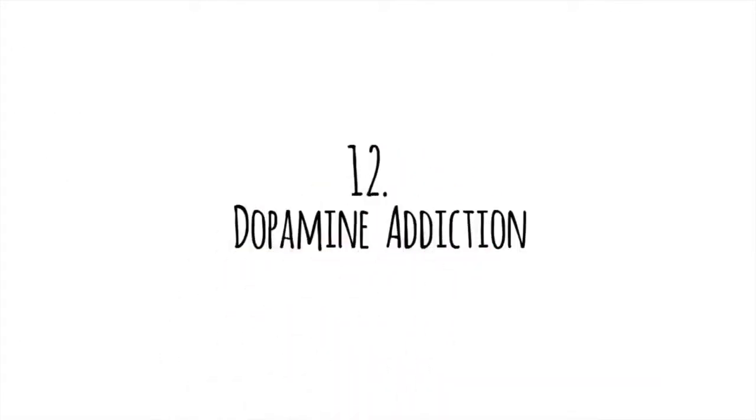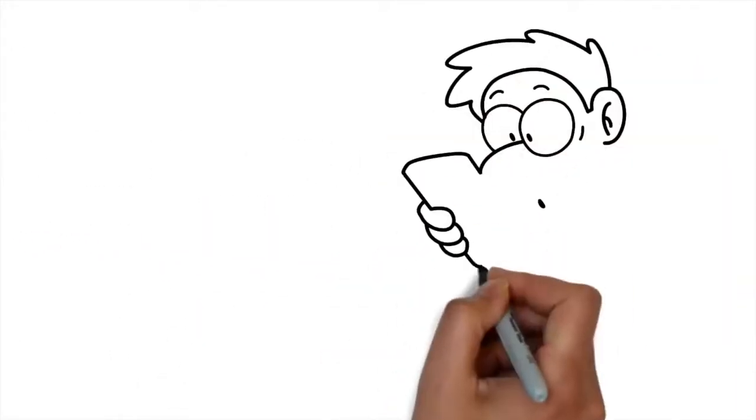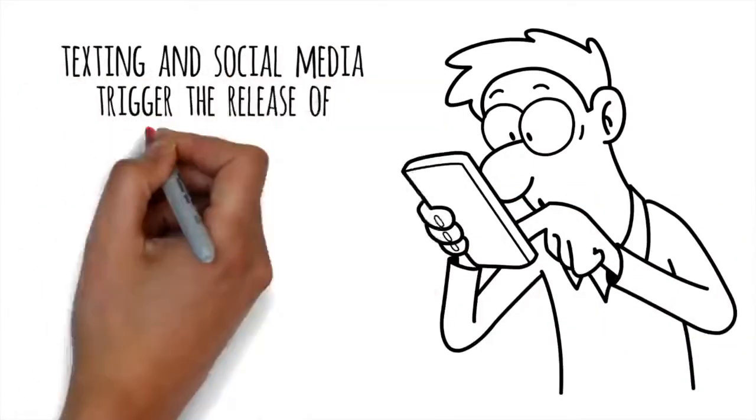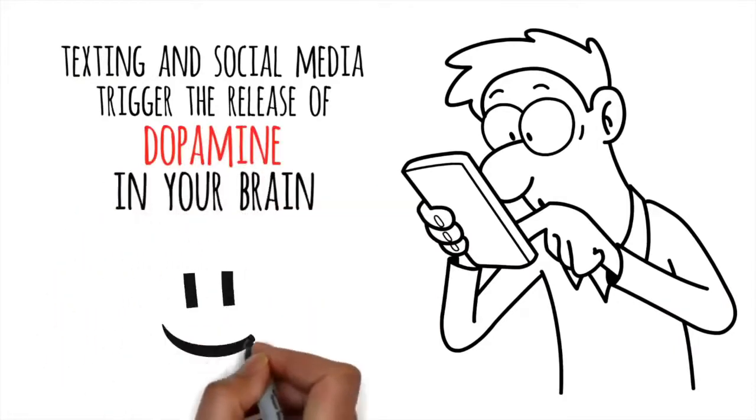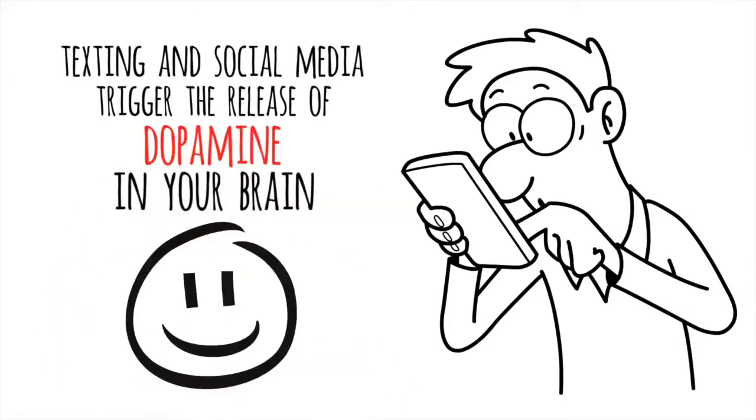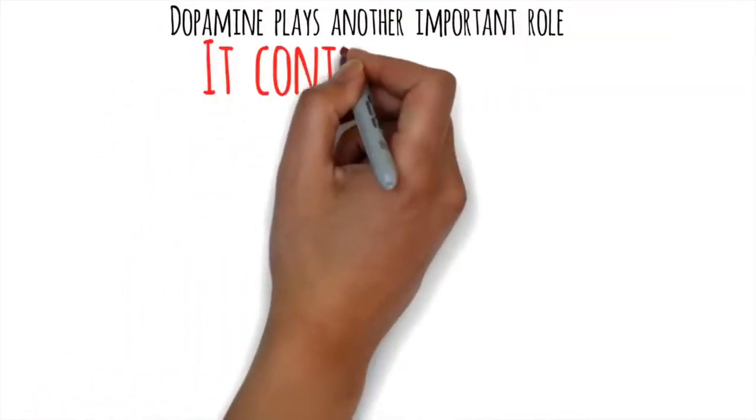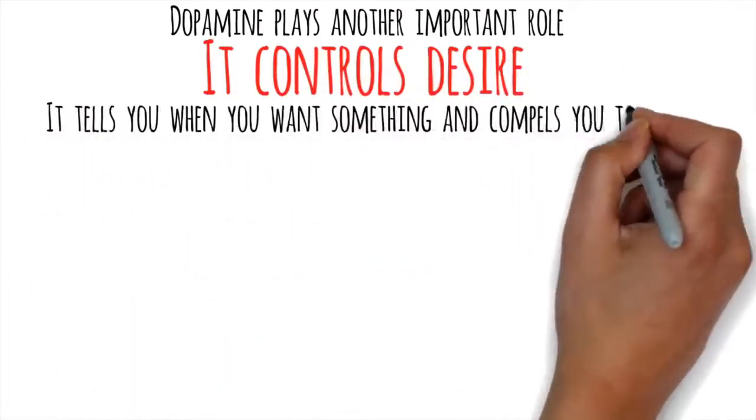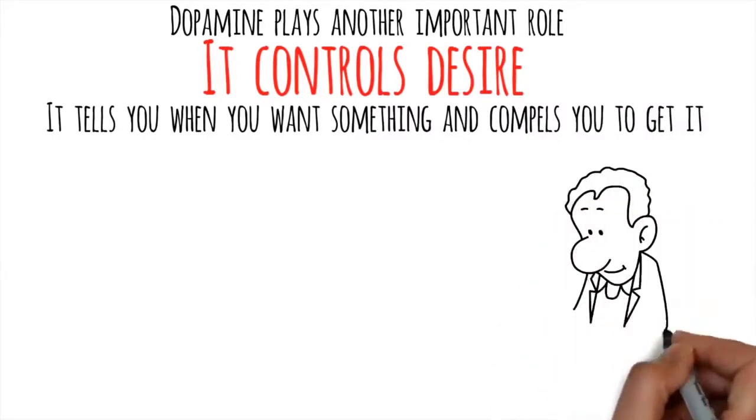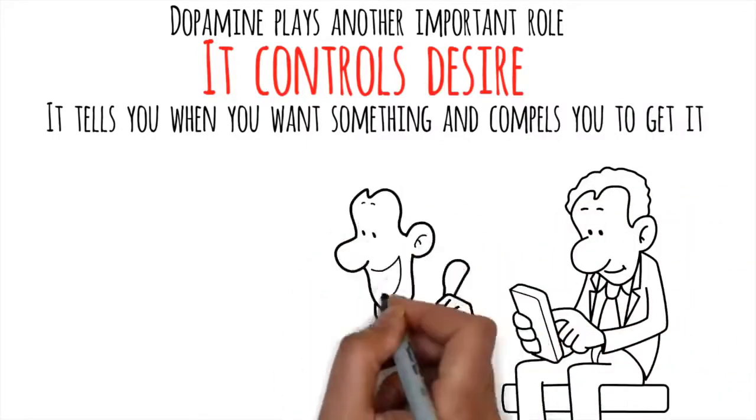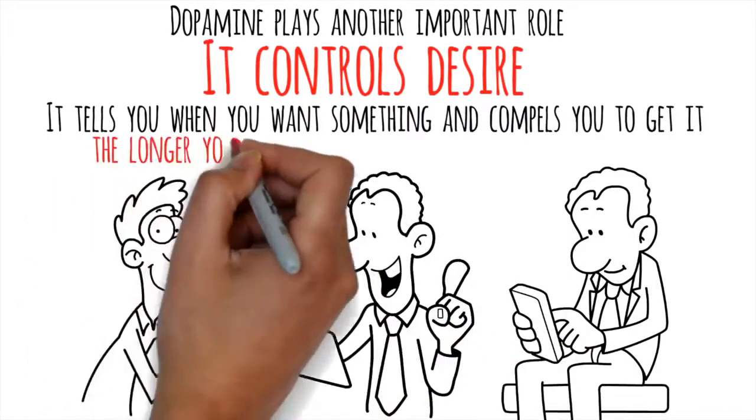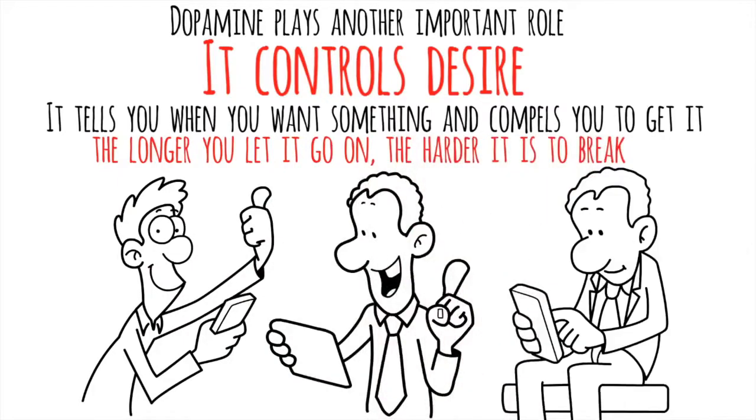Dopamine Addiction. Why is it so easy to stare at your phone for hours on end? A recent study found that texting and social media trigger the release of dopamine in your brain. Dopamine is commonly associated with pleasure, but that isn't why you can't put your phone down. Dopamine plays another important role. It controls desire. It tells you when you want something and compels you to get it. This is what pushes you to keep talking, clicking, or scrolling. Each time you do, dopamine sends more pleasure signals to the brain. It's a dangerous cycle because the longer you let it go on, the harder it is to break.